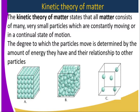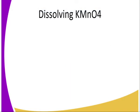In gaseous state, the particles have maximum kinetic energy and therefore their motion is very high. They don't have shape, neither do they have a definite volume or definite mass. Gases have maximum kinetic energy, solids have minimum kinetic energy, and in liquid state they have moderate kinetic energy.